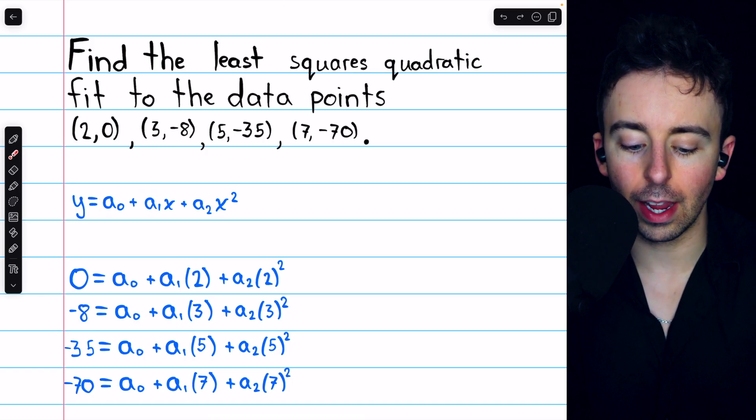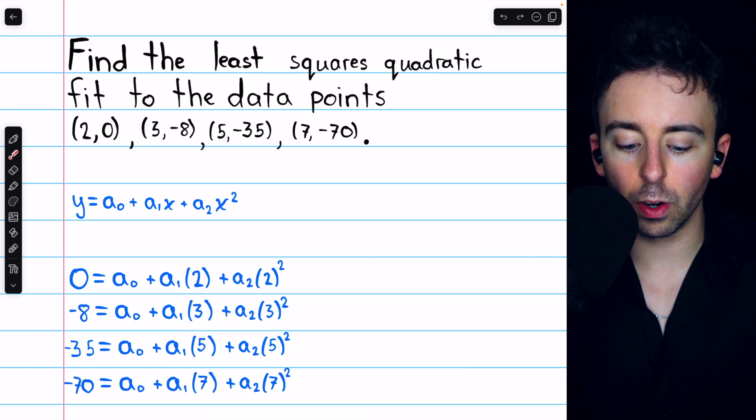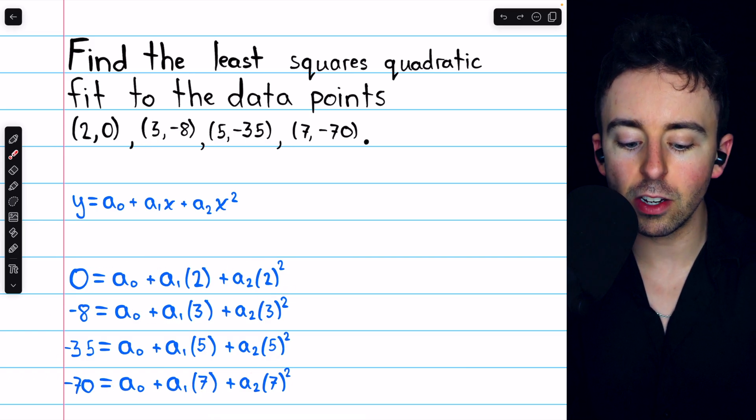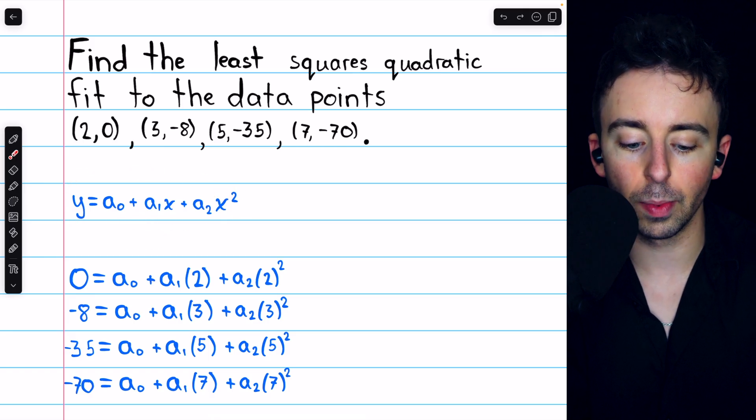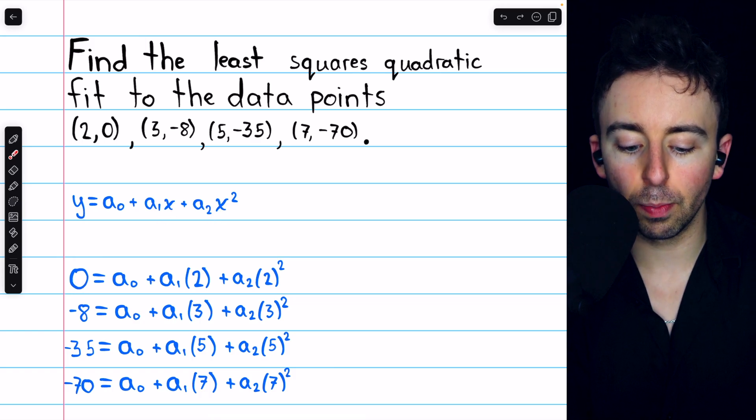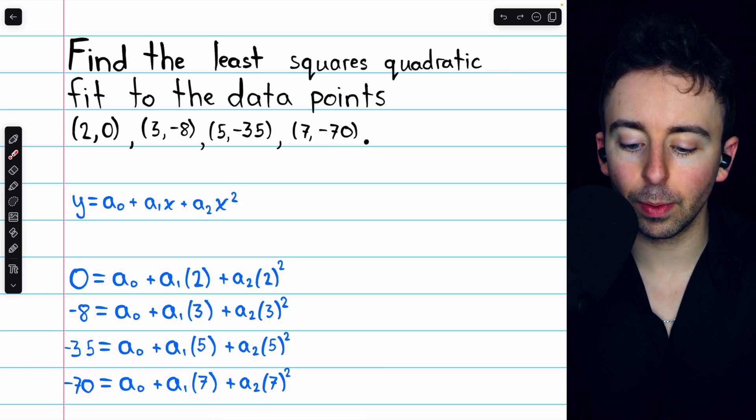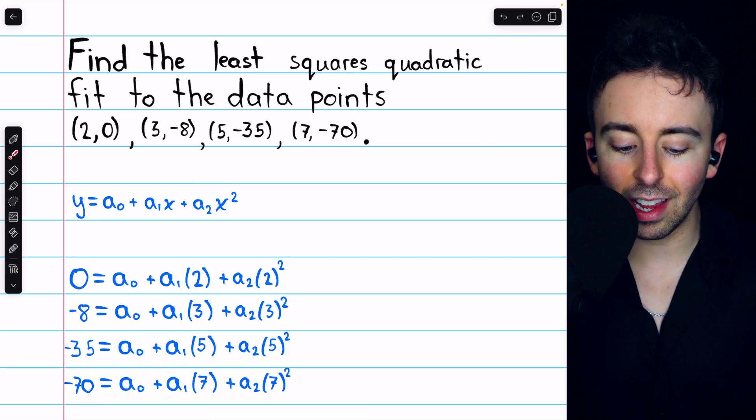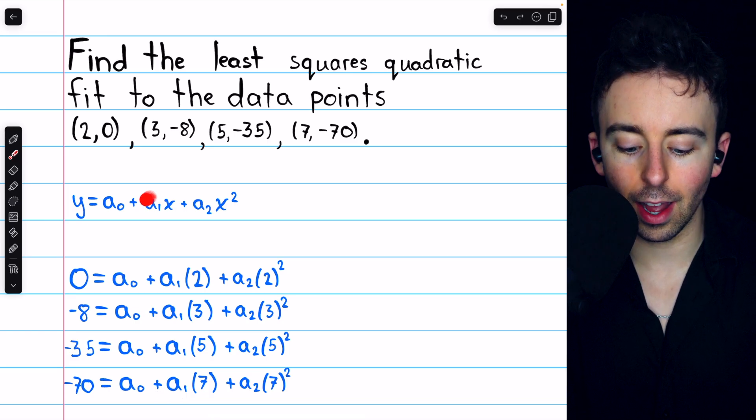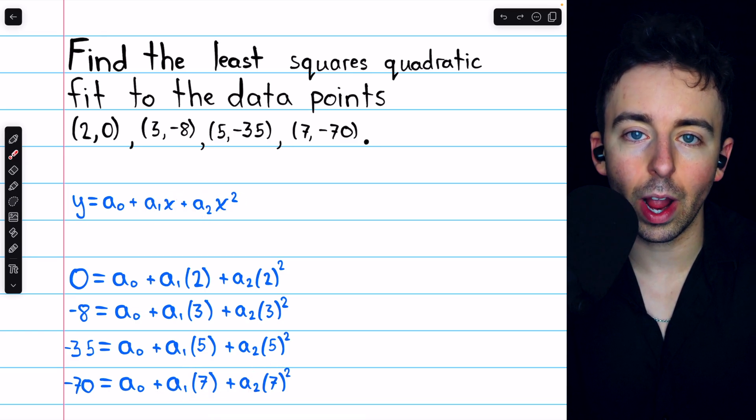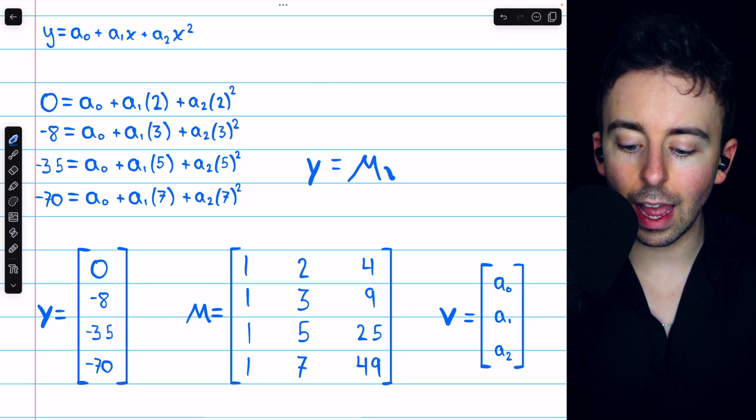We have a constant term, a linear term, and a squared term, because we're specifically looking for the best fitting degree 2 polynomial. Now, because we have four data points, we of course get four equations, one equation coming from each of the four points. For example, if we take the point (2, 0), we then plug that into our unknown degree 2 polynomial. Plug 0 in for y, and then each x is replaced by 2, so a1 times 2, and a2 times 2 squared. Just for another example, we take the point (7, -70), plug -70 in for y, and then each x is replaced by the x-coordinate of 7. So we have a0 plus a1 times 7 plus a2 times 7 squared. We can then write this system of equations in the more condensed matrix form.